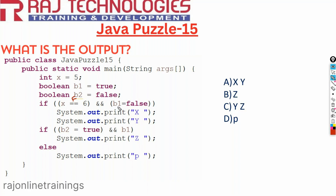We should not think in that way. Here, b1 equal to false is an assignment operator — false will be stored into b1. So the value of b1 becomes false. Now x equal to 6 is false, and b1 equal to false is also false. Both conditions are false, so this line of code will not execute.